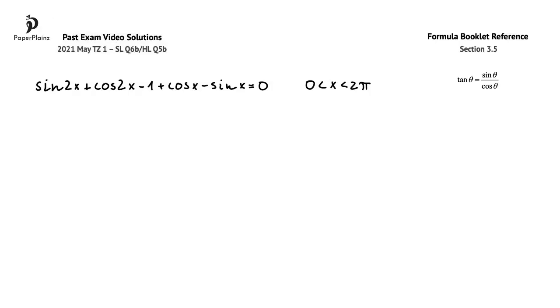Doing so, we replace sin 2x + cos 2x - 1 with the expression that we used in question part A. So we can write that 2sin x(cos x - sin x) + cos x - sin x = 0.